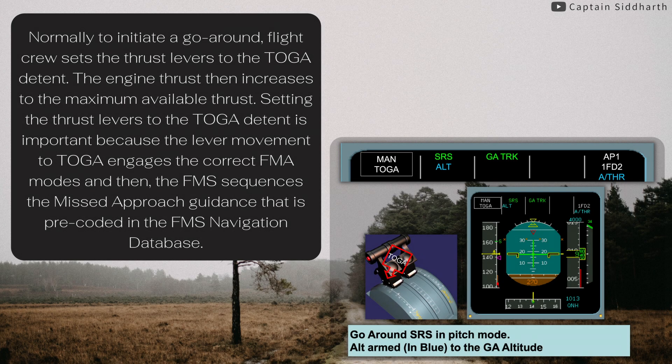Normally to initiate a go-around, the flight crew sets the thrust levers to the TOGA detent, and the engine thrust then increases to the maximum available thrust. Setting the thrust levers to the TOGA detent is important because the lever movement to TOGA engages the correct FMA modes, and then the FMS sequences the missed approach guidance that is pre-coded in the FMS navigation database.